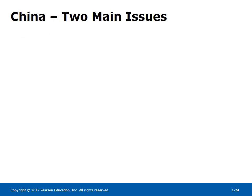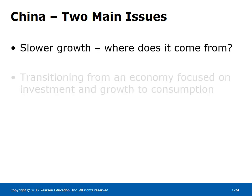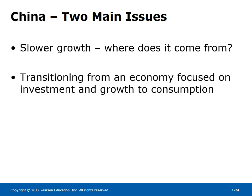Two main issues facing China today: slower growth — where does it come from? — and transitioning from an economy focused on investment and growth to one focused on consumption.